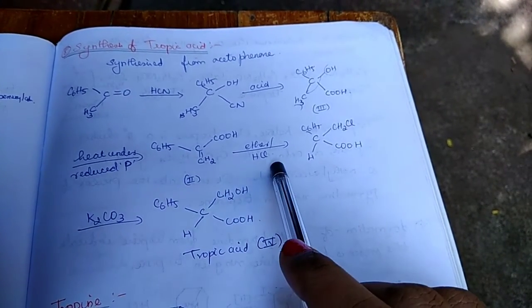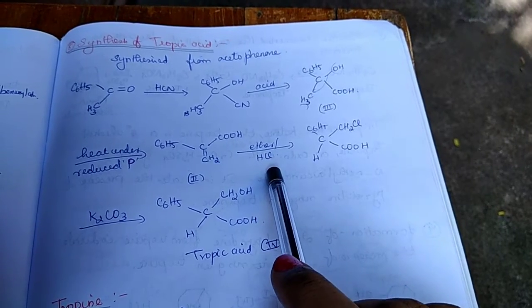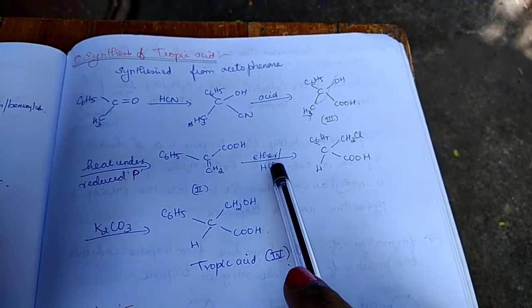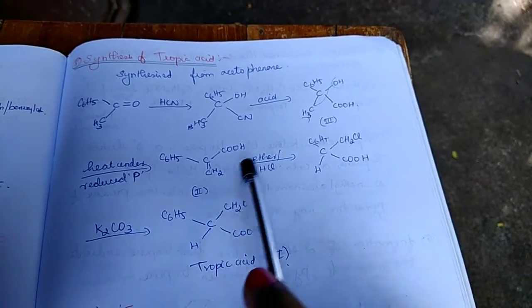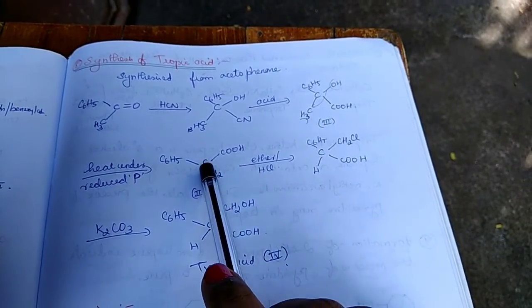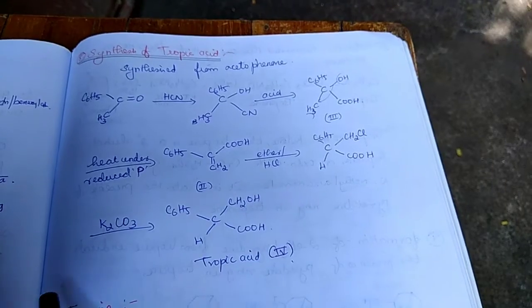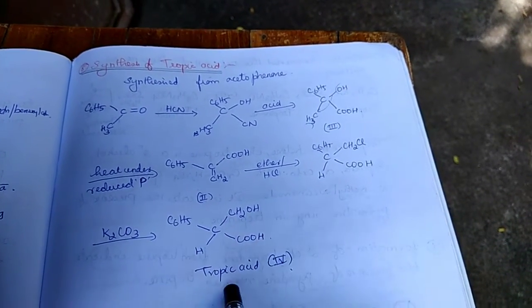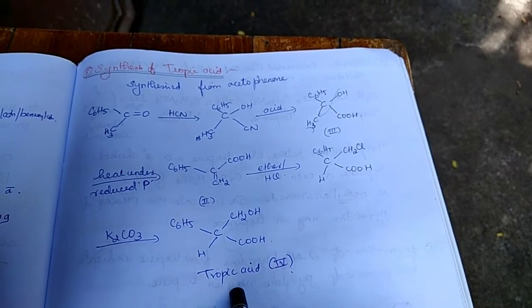With further treatment with ether and HCl, we get this compound. The HCl adds as CH2Cl and the H adds to the carbon. And now we are treating with potassium carbonate, we get the tropic acid. So from this, we can say the structure of tropic acid.